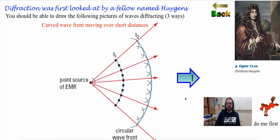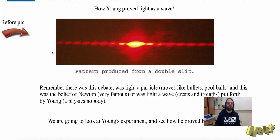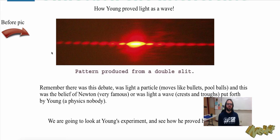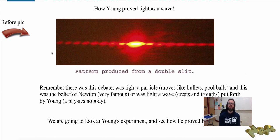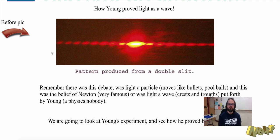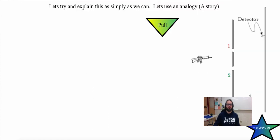So now, let's go back and remember — there was still this debate. Was light a particle, which moves like bullets, pool balls, and so on? This belief was held by Newton, very famous — he's like the giant. Or was it a wave with crests and troughs, put forth by Young, a physics nobody? We're going to look at Young's experiment and see how he proved himself correct.